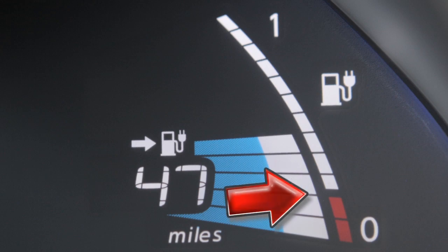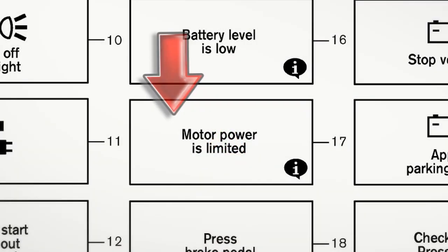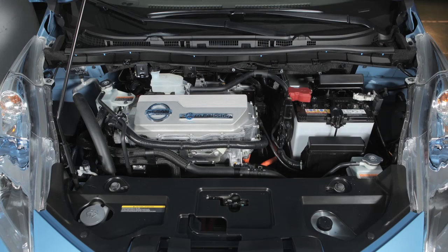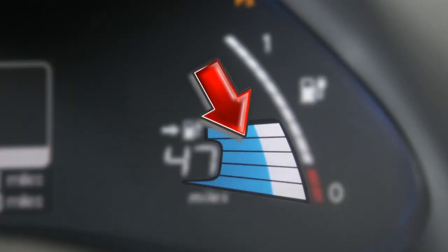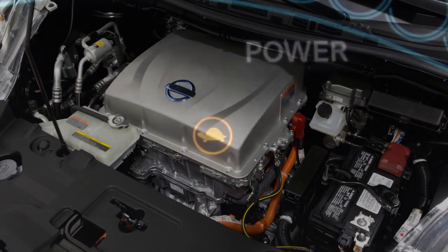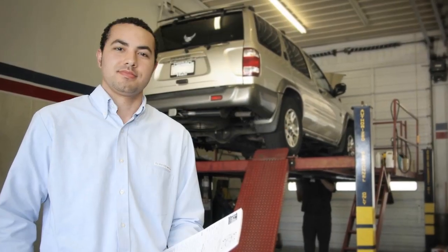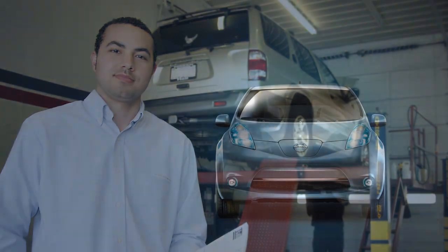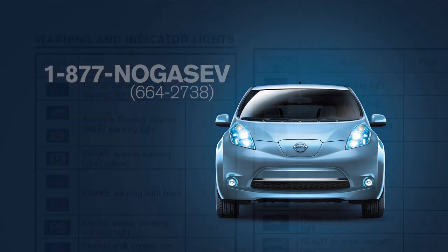The power limitation indicator light, the master warning lights, and the power limitation warning will appear when the battery malfunctions, when the temperature of the lithium-ion battery has reached its upper or lower limits, or when the available battery charge is getting too low to move the vehicle. The motor output will be limited when the power limitation indicator light is displayed. Stop the vehicle in a safe location as quickly as possible and contact your Nissan certified Leaf dealer or the Nissan call center at 1-877-NOGASEV.